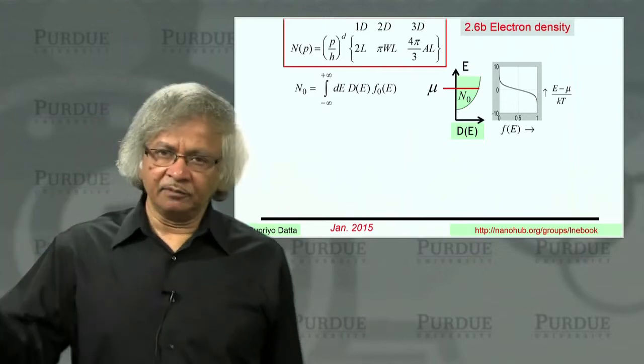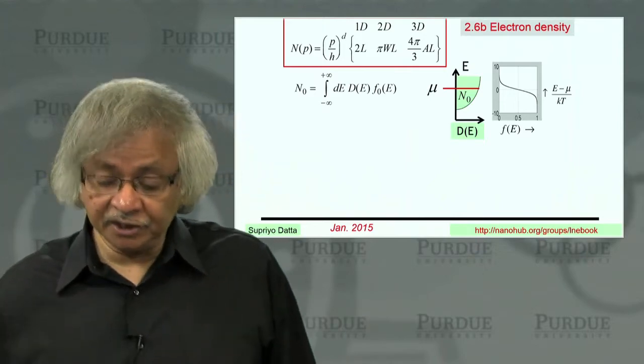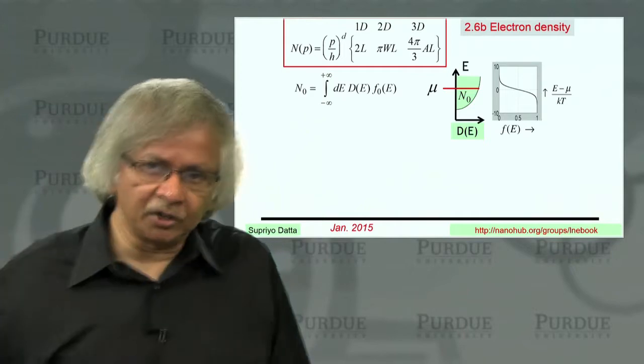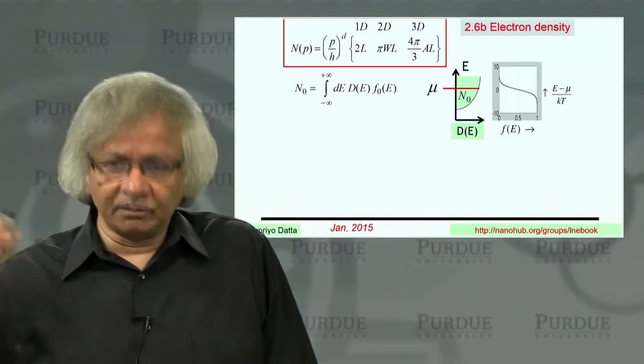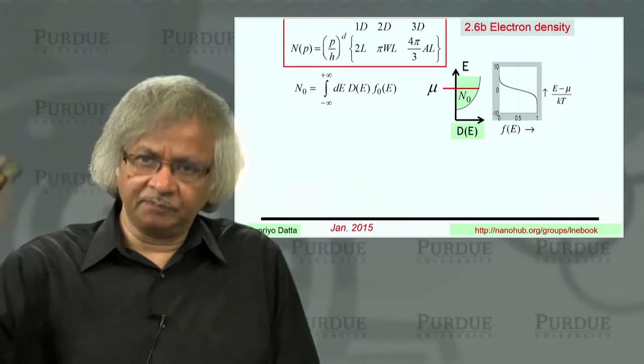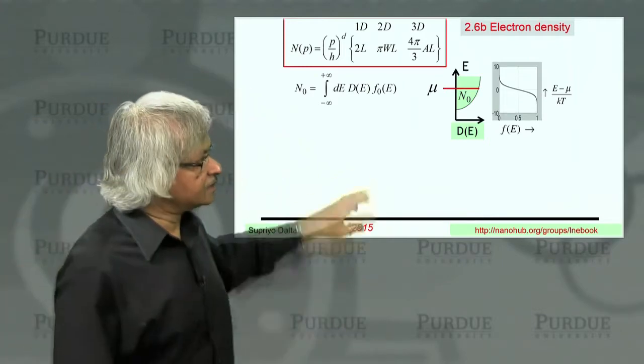F0 tells you, the Fermi function tells you if the state is occupied or not. So if you want the number of electrons, then you should take the number of states and multiply it by whether it's occupied or not. So that's this.